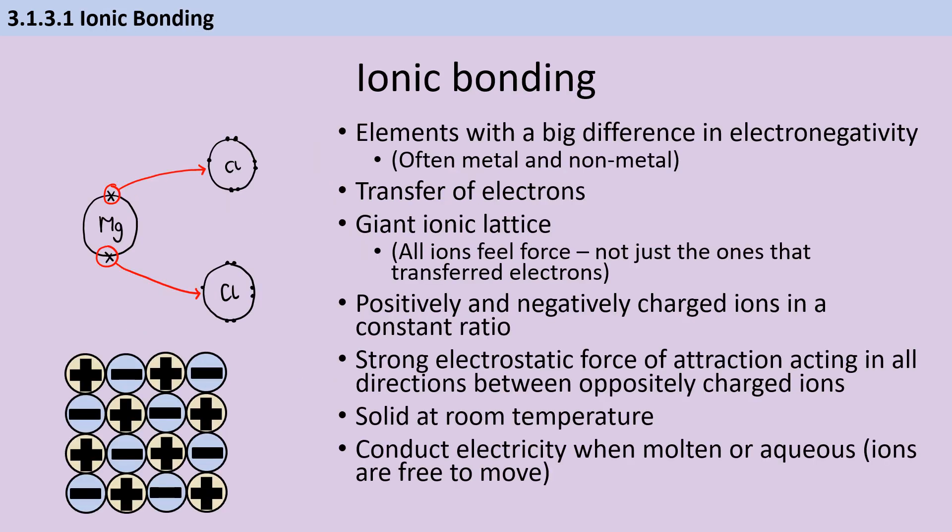Unlike at GCSE, while we made distinctions between bonding types based on whether things were metals or non-metals, at A-level we appreciate that it's a bit more nuanced, and really we're talking about differences in electronegativity. Elements that have a large difference in electronegativity experience ionic bonding, and this involves electrostatic attraction between the oppositely charged ions in a giant ionic lattice. These substances are solid at room temperature because the strong electrostatic force of attraction requires such a huge amount of energy to overcome.